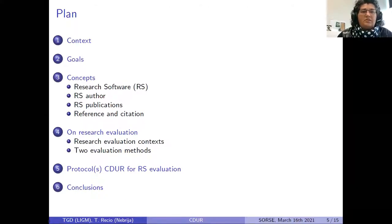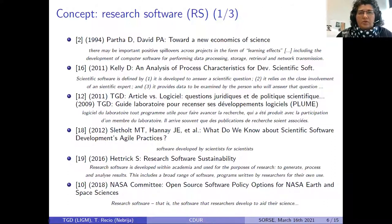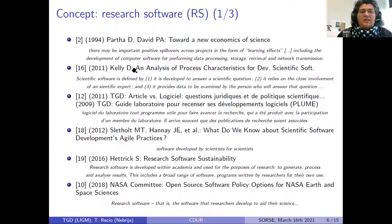We've seen the context and goals. Now we'll look at the main concepts that are very important to understand well. The first is the research software concept. We looked through a lot of publications to understand how the scientific world defines research software. One of the oldest references is by Partha and David. It was very interesting to see how they understood research software as a spillover of research work — but a positive one.